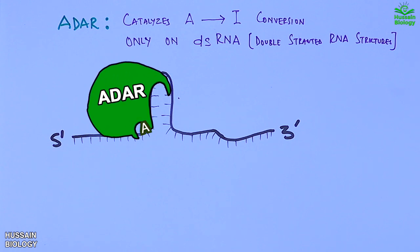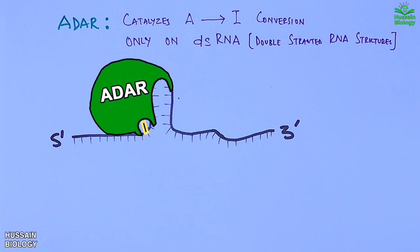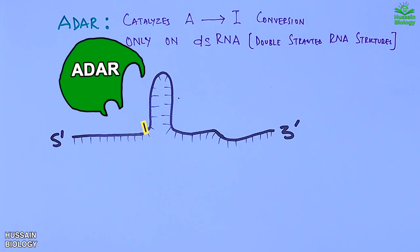The ADAR works in presence of water molecule and drives nucleophilic hydrolytic deamination of adenosine to inosine as shown in the diagram. So ultimately we get the A to I conversion, thereby editing the RNA molecule.